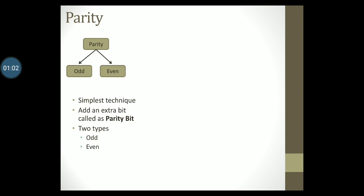Let us see how it works. Supposing we have four data bits 0 1 0 1. We simply insert another bit and call it as the parity bit. Assume now that we are following the odd parity system. For odd parity we will set this parity bit to 1 so that the total number of 1's in the codeword along with the parity bit becomes odd.